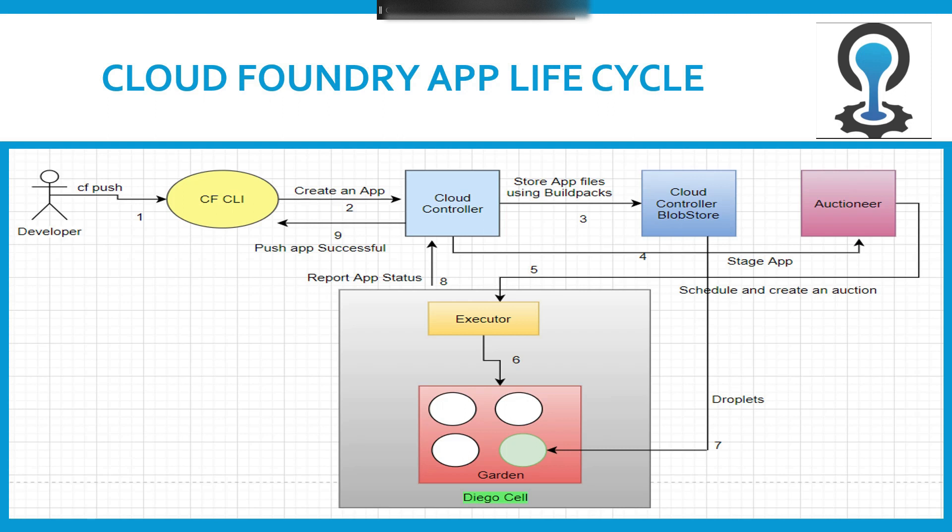The auctioner sends a request to the executor to schedule and create an auction. The executor will create a Garden container inside the Diego cell. Think of the Diego cell as a VM, and inside that VM there are several Garden containers running. This works in a similar fashion to Docker — in Docker we have a VM with multiple Docker containers, but here in Cloud Foundry we use Garden containers.